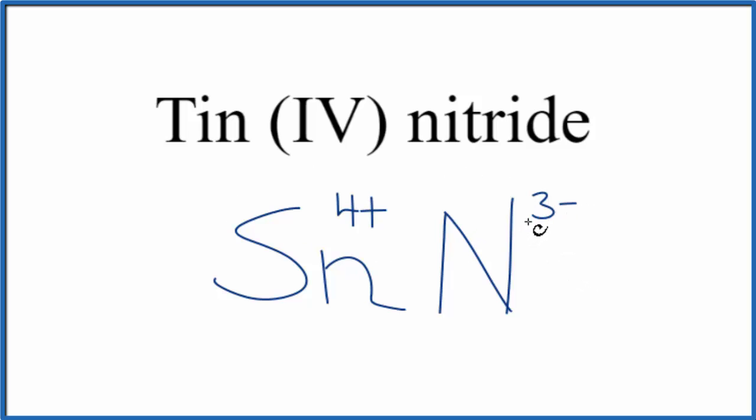And these charges, they need to add up to 0, give us a net charge of 0. That's because tin (IV) nitride is a neutral compound. It doesn't say ion after it.